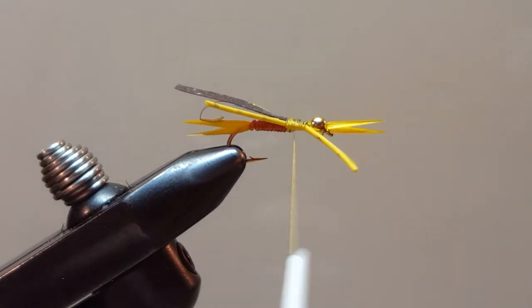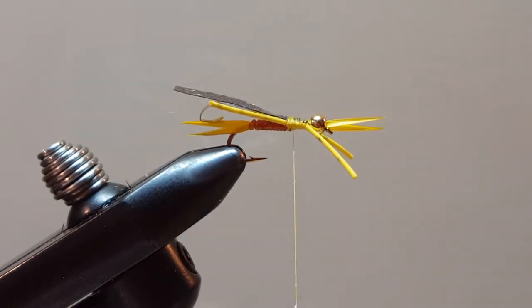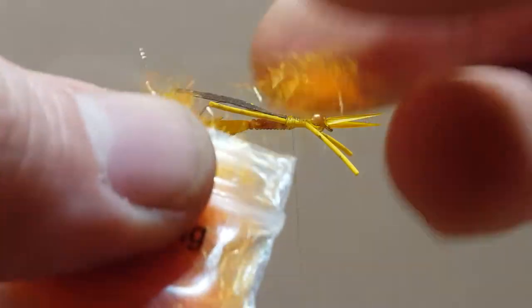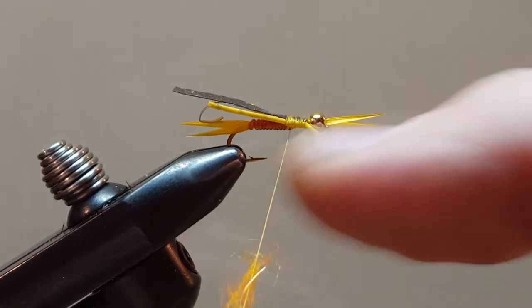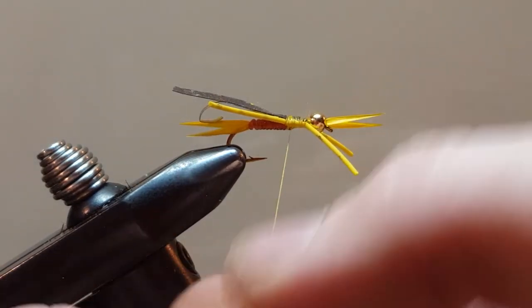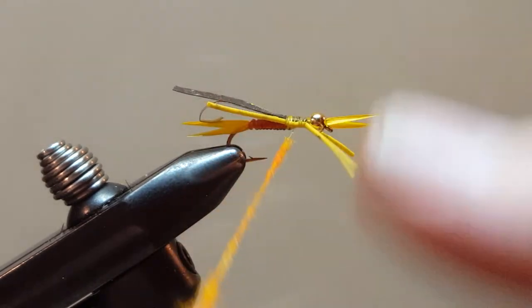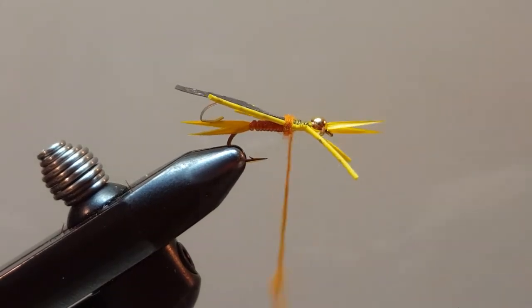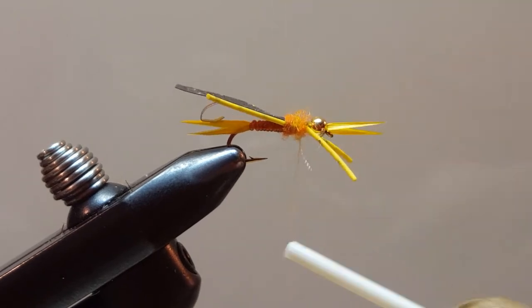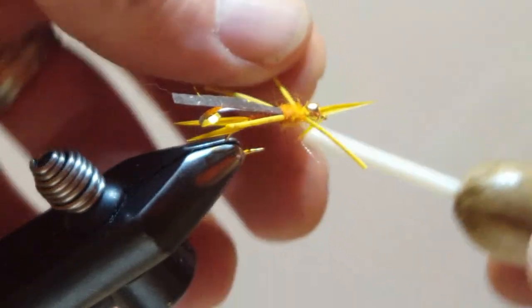We'll come in with our dubbing. I'm going to add just a little bit of wax here. And the hot orange dubbing, just a little, just the smallest little bit goes a long way. We don't want to build up too much bulk. So a nice, tight dubbing noodle. I'll give it a few wraps. Right there on that thorax.